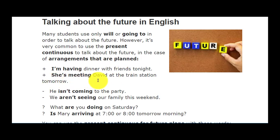'She is meeting David at the train station tomorrow.' 'Tomorrow' bhi ek future time marker hai. Yeh us ki fix arrangement ya appointment hai — is ki meeting scheduled hai.